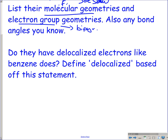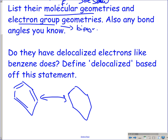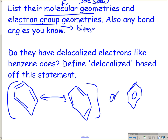Delocalized — if I asked you to tell me what delocalized means based on your knowledge of the Lewis structure of benzene, what would you say? Delocalized means not located in a specific location. That's why we can draw benzene in two resonance structures or the shorthand way, showing that those electrons are anywhere within that cyclic ring. Delocalized pi bonds or double bonds don't have a specific location — they can rotate around or are free to move.